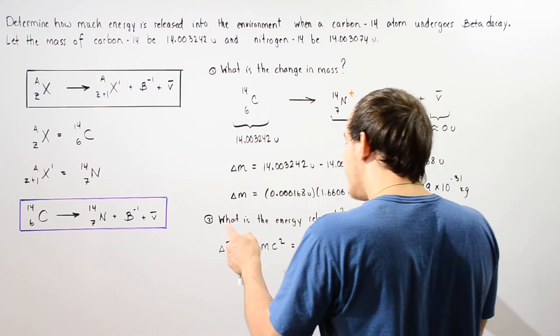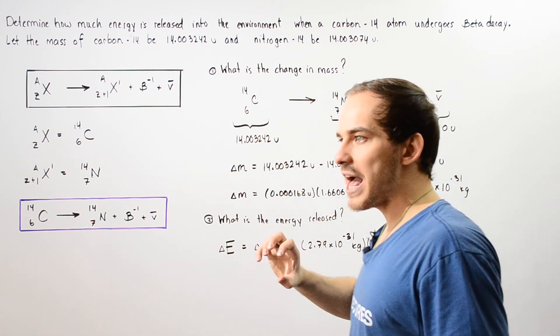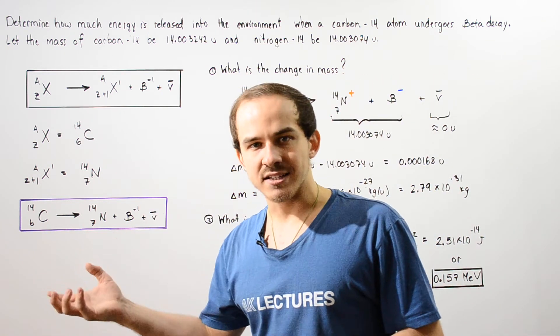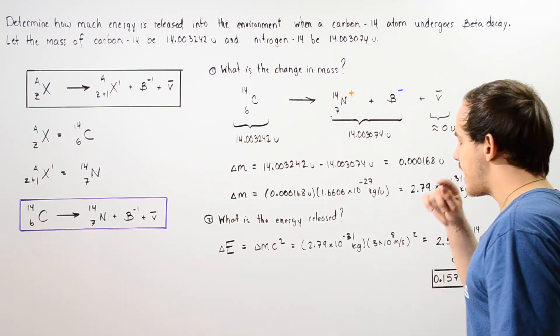Now what is the energy released? So we have a decrease in mass and that decrease in mass is basically transformed into energy and we use the rest mass energy equation.